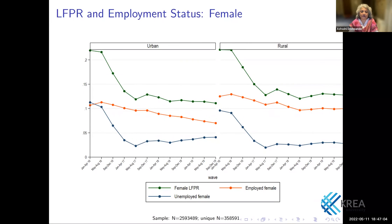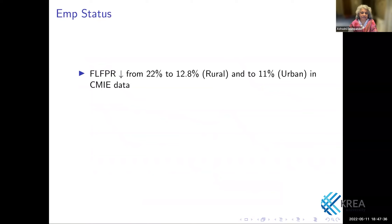This is a picture of female employment and labour force status in CMIE data. Focusing on the green line, you see a decline both in urban and rural areas — this is slightly different from NSS, where the bulk of the decline is from rural areas. In CMIE data, there is actually a sharp decline both in urban as well as in rural areas. Female labour force participation rate declined from 22 to 12.8% in rural and to 11% in urban.